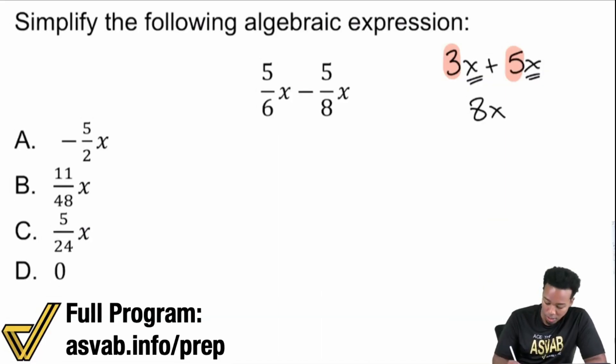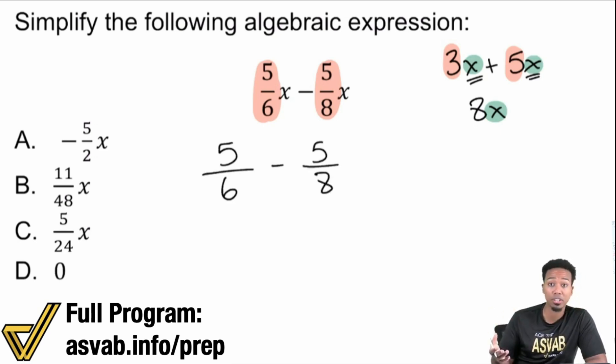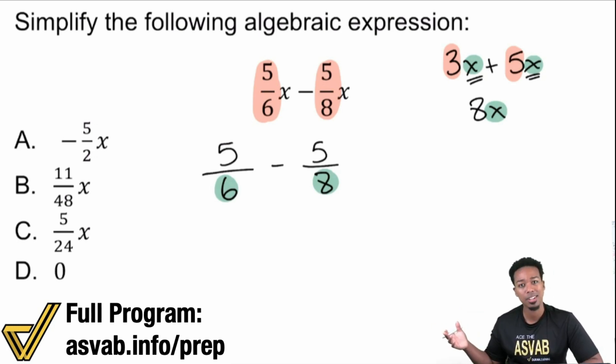You're gonna go ahead and essentially subtract this time, but you're gonna subtract the five over six and the five over eight. You're gonna subtract them and then bring the X right back. That's it. That's really it. You're basically saying I have this much of X and I'm gonna subtract that much of X. So let's go ahead and understand the rules now. Really again what we're doing is five over six minus five over eight.